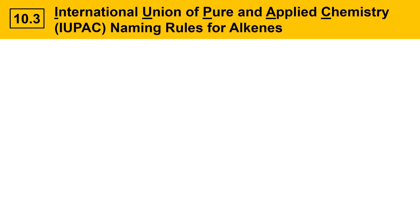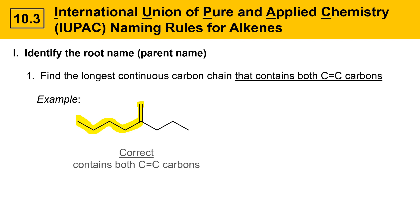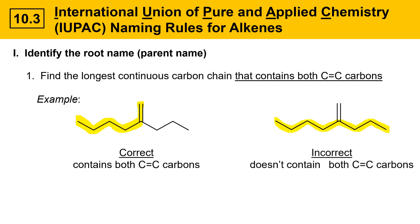Then we'll move on in another video to naming stereoisomer alkenes. The first thing you need to do is identify the root name, or the parent name for the molecule. Find the longest continuous carbon chain that contains both C=C double bond carbons. The highlighted option for the longest carbon chain here is correct because it contains both carbons of the C=C double bond. Here's an option that looks tempting because it finds a longer overall carbon chain, but it doesn't contain both carbons of the C=C double bond, so it's not correct. Don't name it this way.